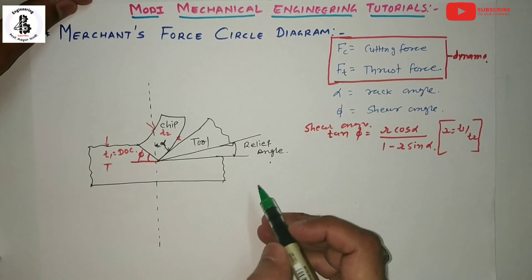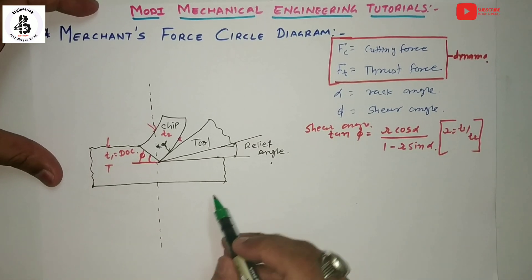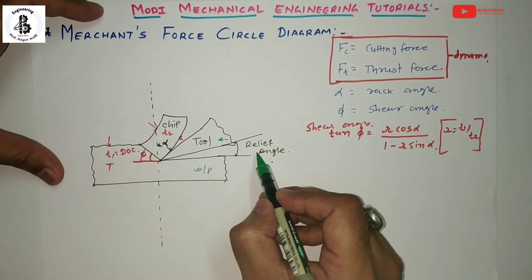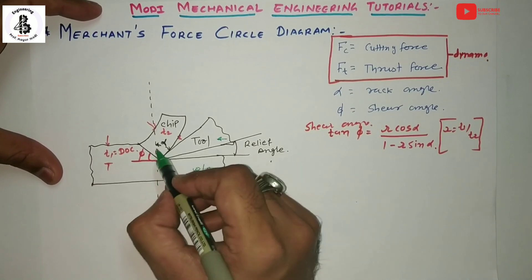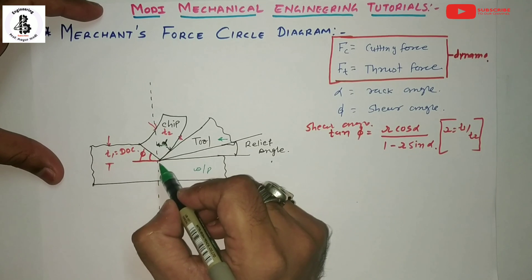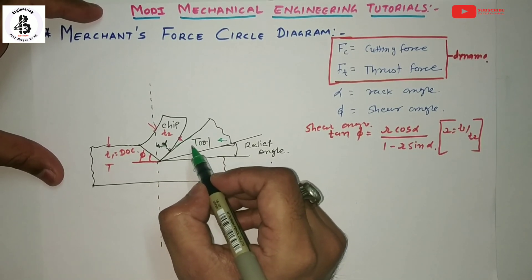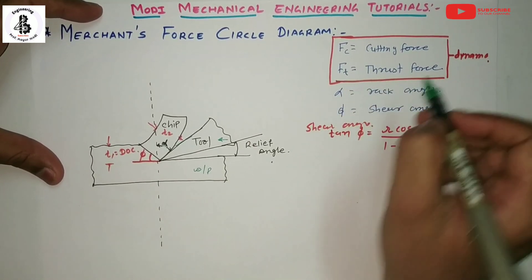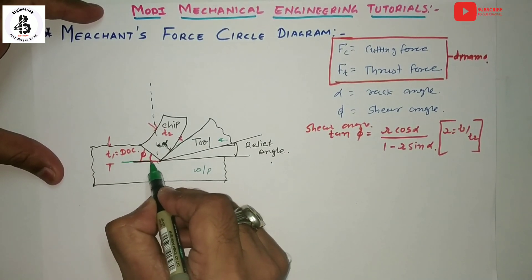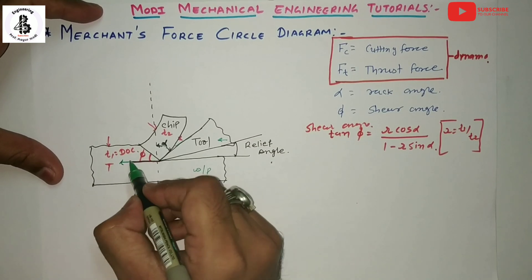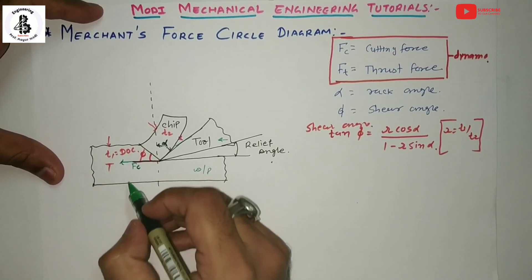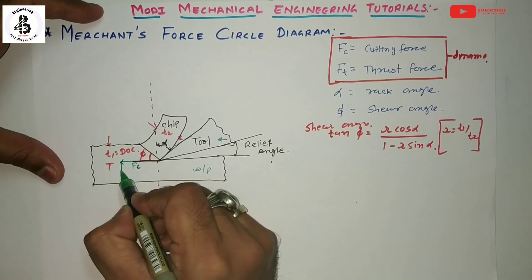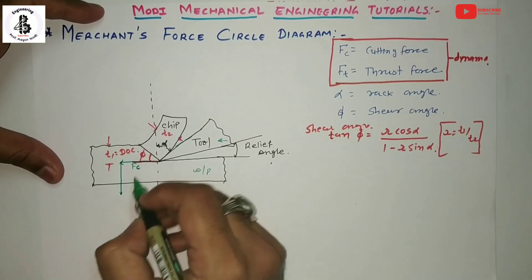Now concentrate on the basic setup of the metal cutting operation. Here the workpiece material is present and the tool is being fed. The relief angle is given for cutting, and the rack angle alpha is the angle between the vertical plane and the rack face, i.e., the top face of the tool. FC and FT are measured from the dynamometer.